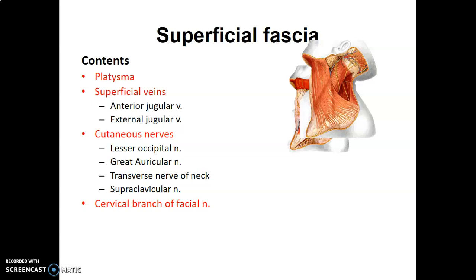Remember, the facial nerve within the substance of the parotid divides into five branches: temporal, zygomatic, buccal, mandibular, and cervical. The cervical branch goes downward to supply platysma, which is a muscle of facial expression — it brings the angles of the mouth downwards.